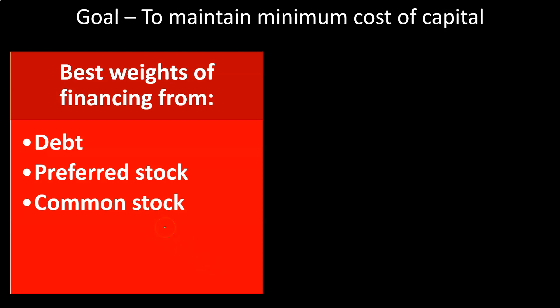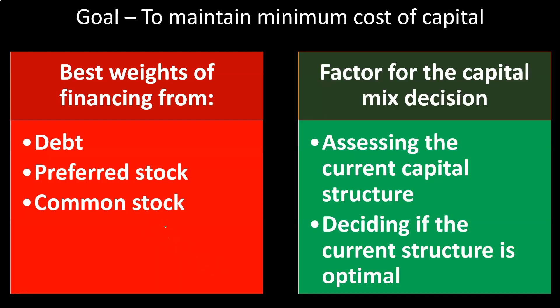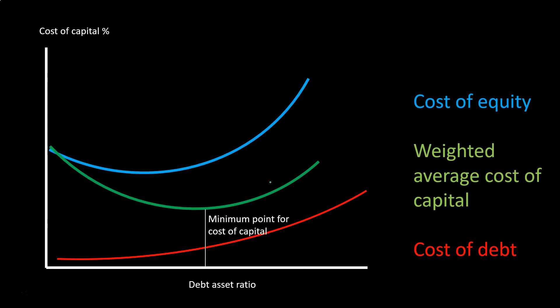We're focusing mainly on debt and common stock, with preferred stock being another kind of equity financing. Conceptually, think of two categories: debt financing and equity financing. The factor for the capital mix decision is assessing the current capital structure — what it is now — and then deciding if the current structure is optimal as we make financing decisions going forward.